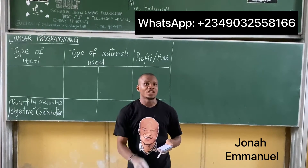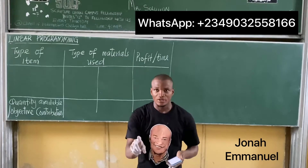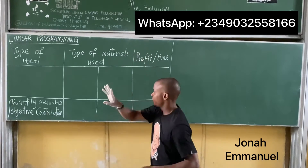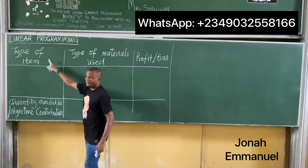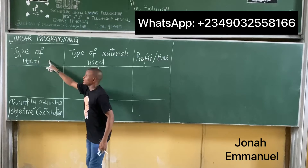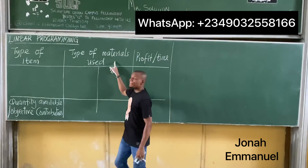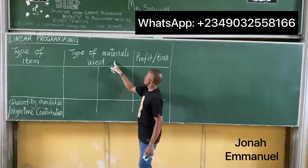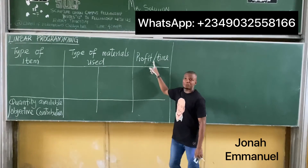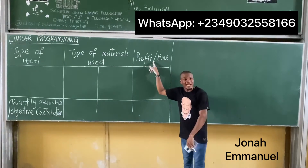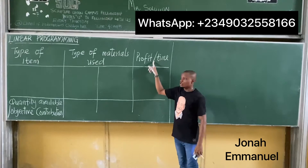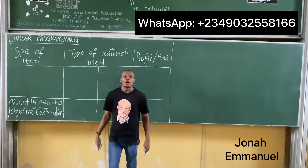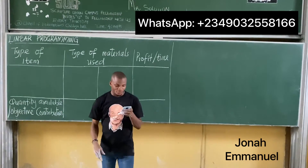So in every question, look out for four things. Number one, type of item. Number two, type of material used. Number three, the profit or time given. Number four, quantity available or objective function.